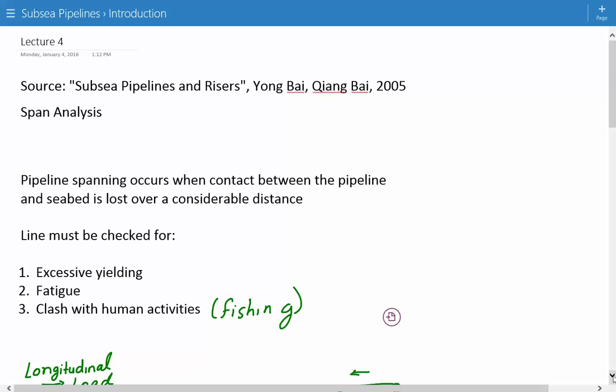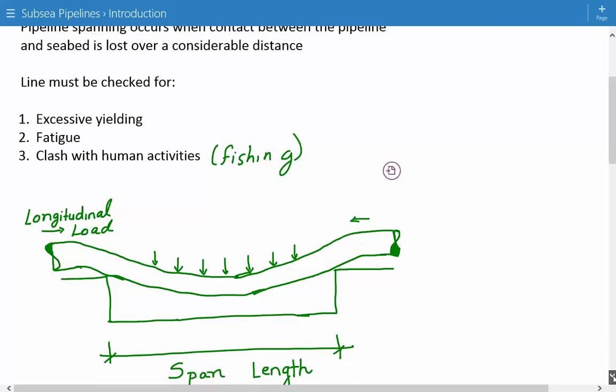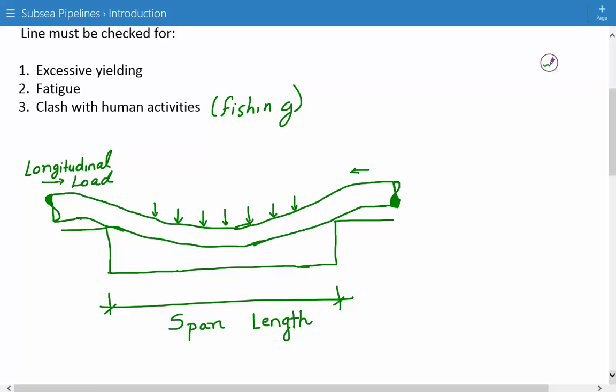So this is just a schematic, just a representation of some spanning. So you may have the seabed over here, and there may be some change in elevation. So the pipeline loses contact with the seabed. And you have the self-weight of the line and you may have some longitudinal load. And so the span length is shown over here. So if the span length is of a considerable distance, then there could be some issues that arise.